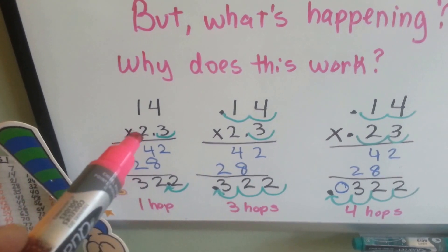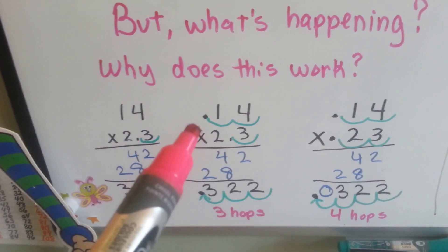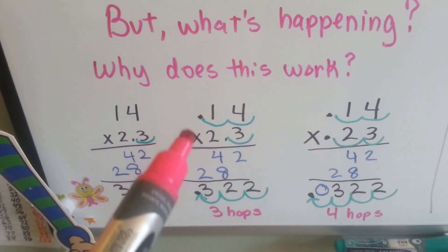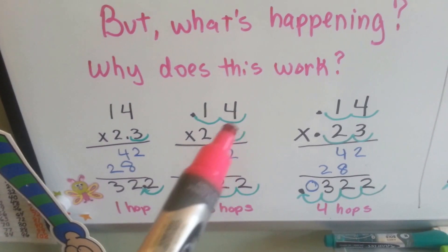Well, we're multiplying the 2 and 3 tenths by 14 full times. If we had 14 hundredths times 2 and 3 tenths, we'd have the same numbers, but the hops would be different.